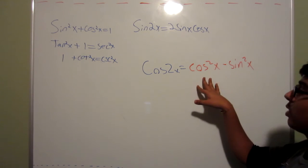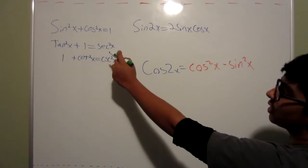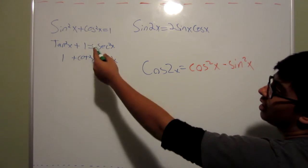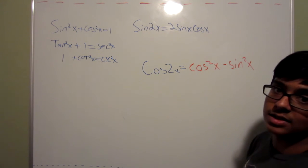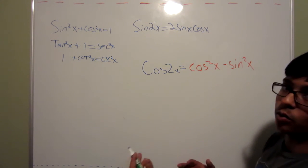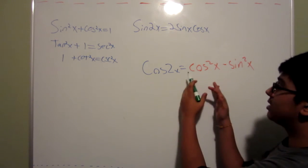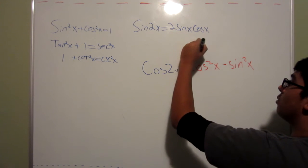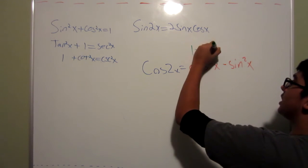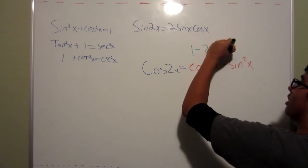If you start off with replacing cosine squared x, you take the original function, or the original identity up here, and you just make cosine squared x by itself, and you'll get 1 minus sine squared x. If you take 1 minus sine squared x, replace the cosine squared x here, you'll get 1 minus 2 sine squared x.